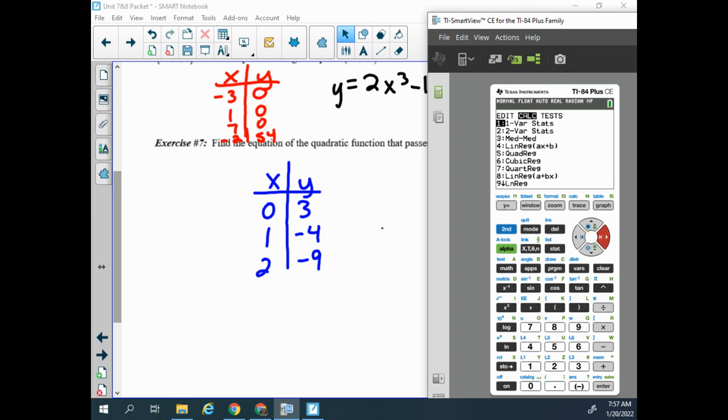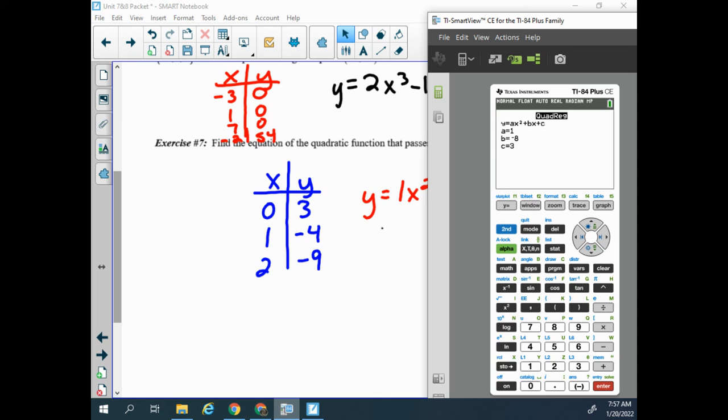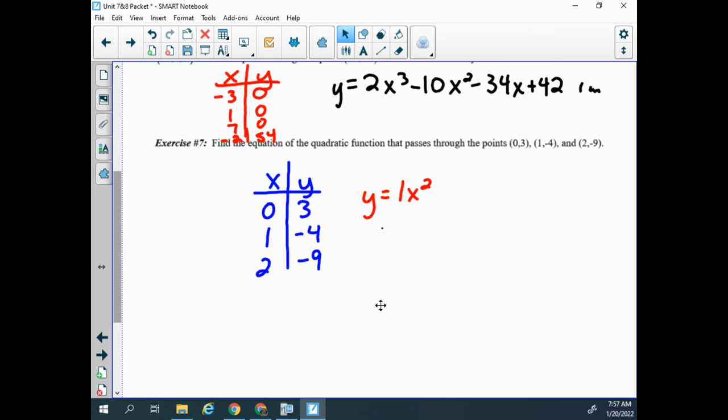Stat, calc, number 5 is quadratic regression. And we get 1x squared minus 8x plus 3. So y equals 1x squared. I don't have an answer here for this one. So minus 8x plus 3.